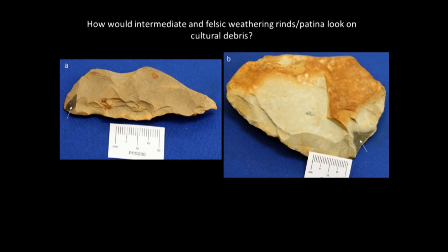That's how it looks on geologic hand samples — but how does it look on cultural debris? On the left we have the drab olive weathering rind of the intermediate; the arrow points to a broken fresh surface showing no light interior. On the right, the arrow points to light-colored weathering with patchy brown of a different shade — that's the felsic weathering rind. You can hold these two side by side and compare the colors.